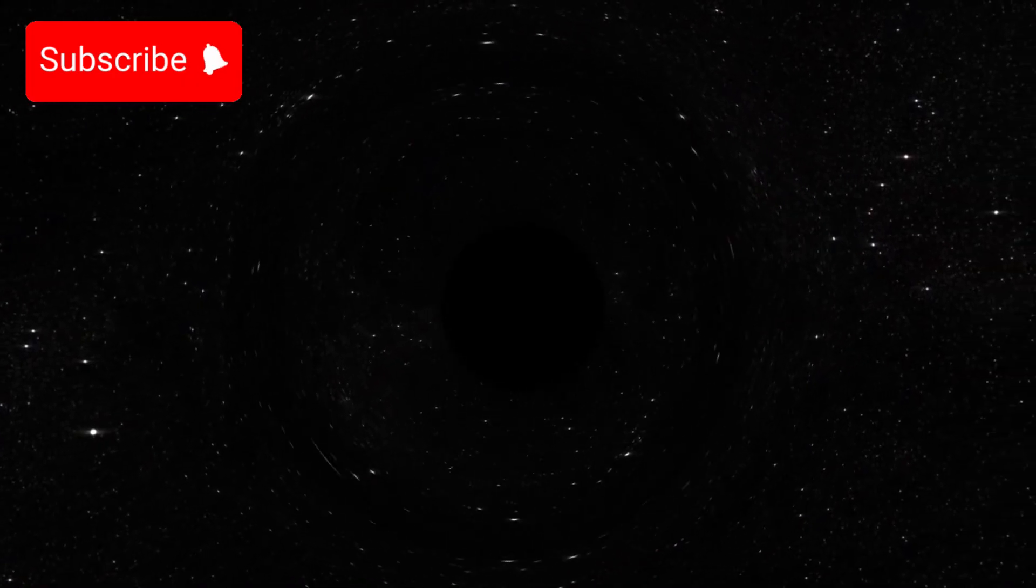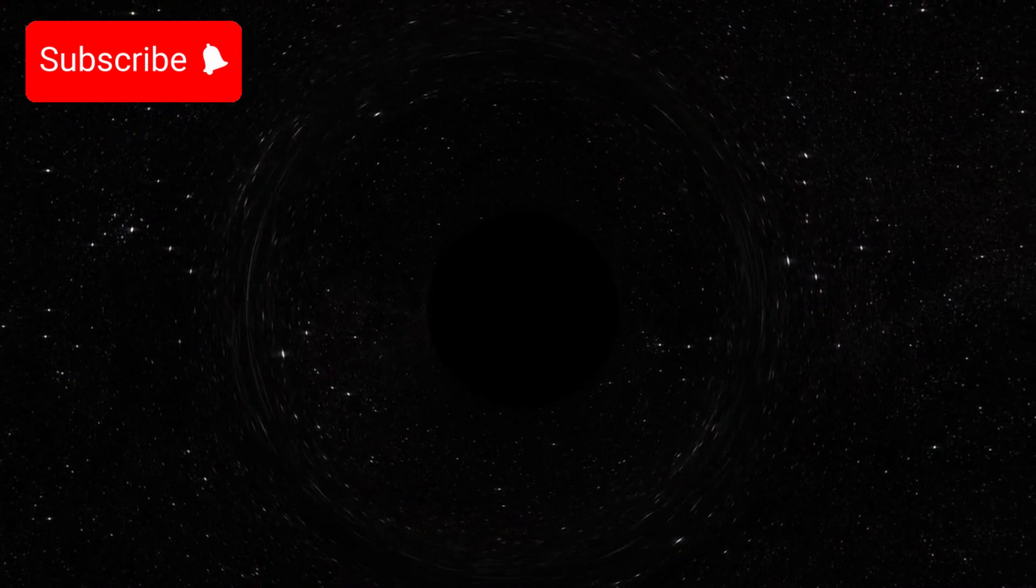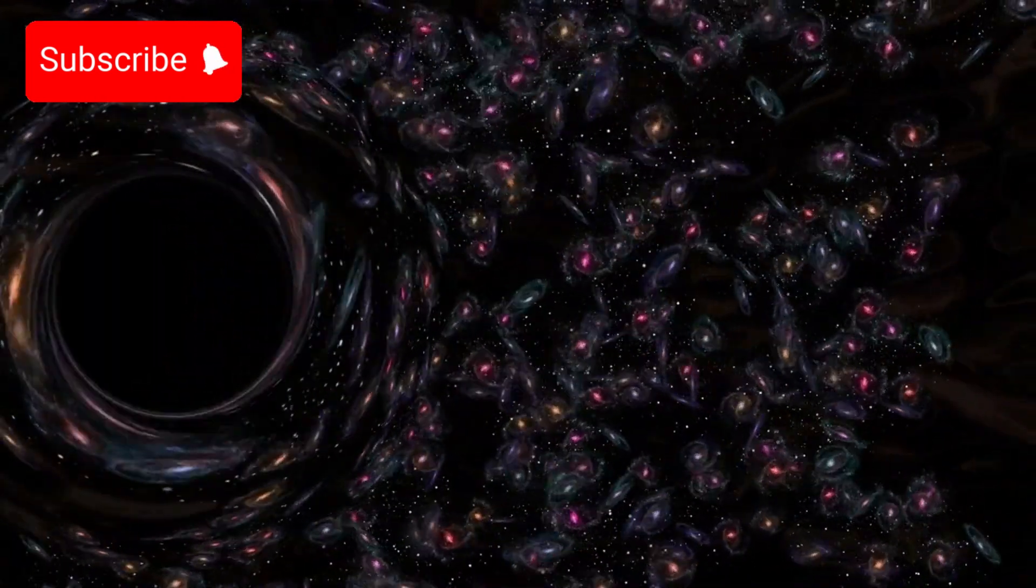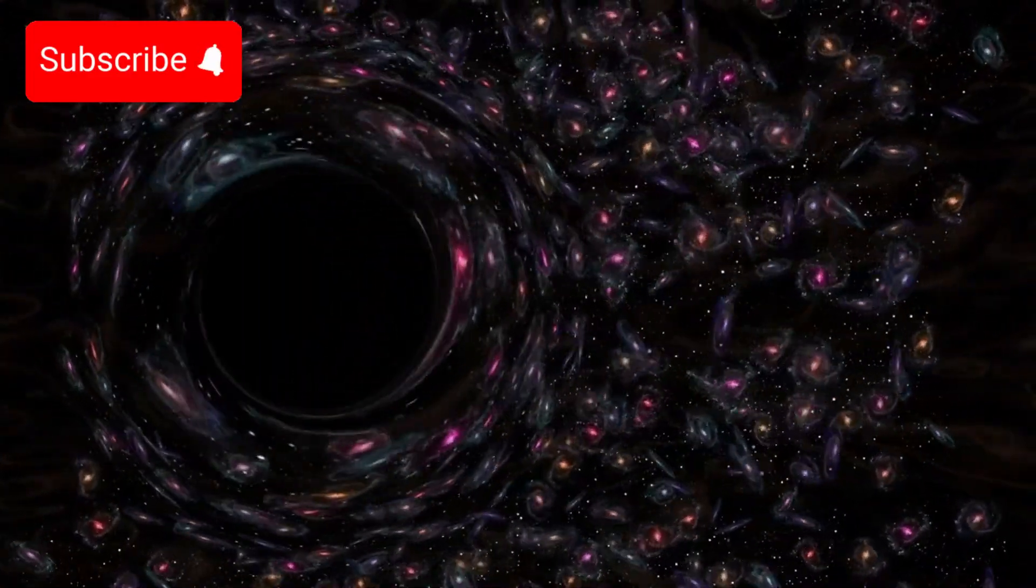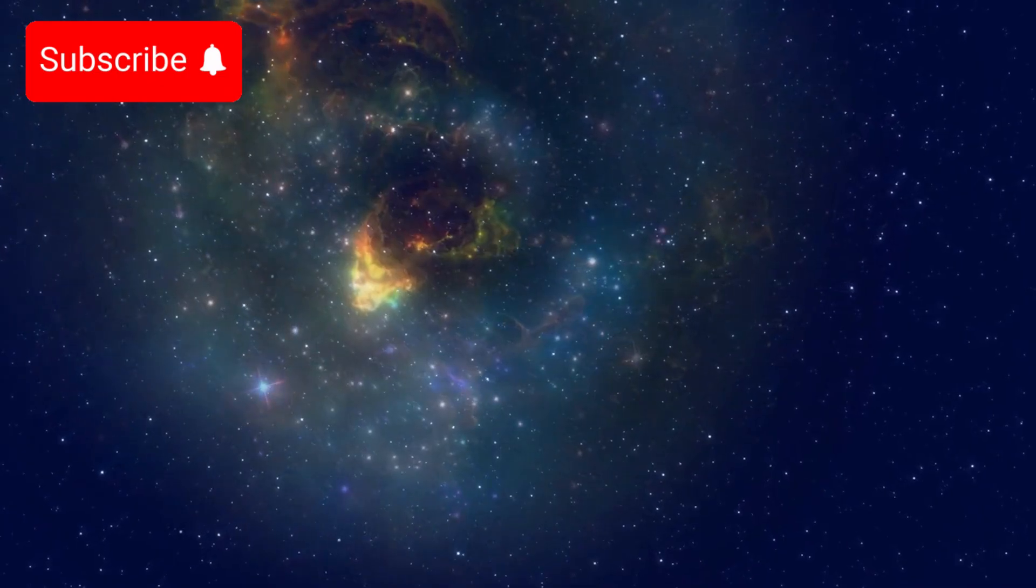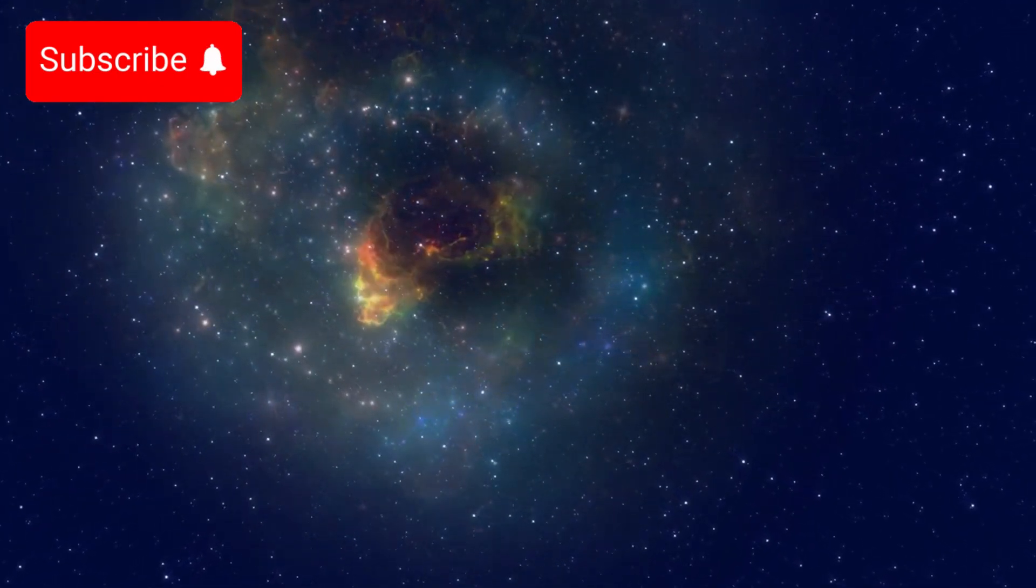The remarkable ability to observe Earendel at such a vast distance is largely due to the phenomenon known as gravitational lensing. This effect occurs when a massive galaxy cluster situated between Earth and the distant star acts as a gravitational lens. Essentially, the gravity of this galaxy cluster warps the fabric of spacetime, bending and magnifying the light from Earendel. This magnification functions much like a cosmic magnifying glass, enabling astronomers to capture detailed images of this ancient star.